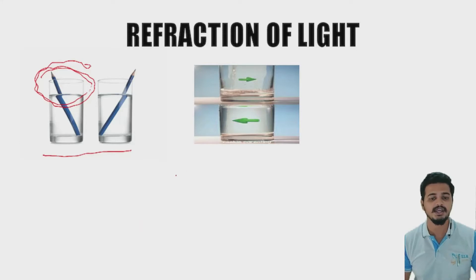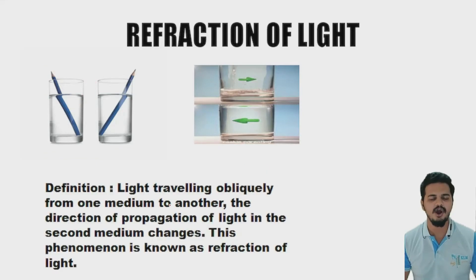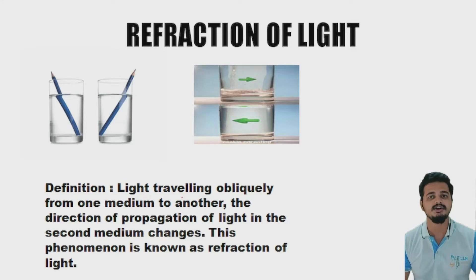You can also perform this experiment: draw an arrow and place a glass of water in front of it. You can see the arrow changes its direction. We know that light travels at different speeds in different media, so when light passes from one medium to another, its propagation changes. This is nothing but refraction.